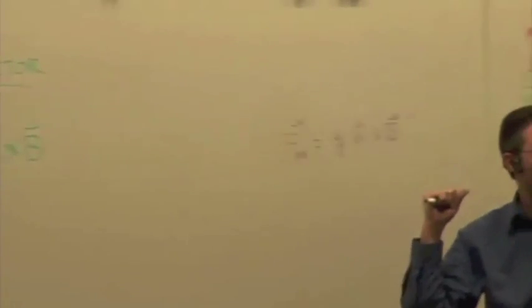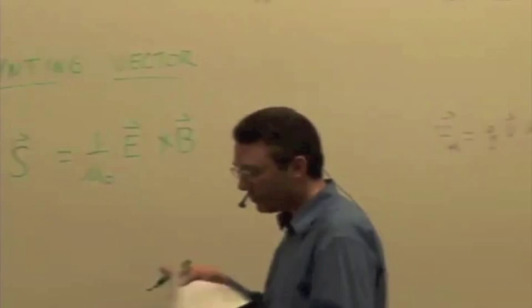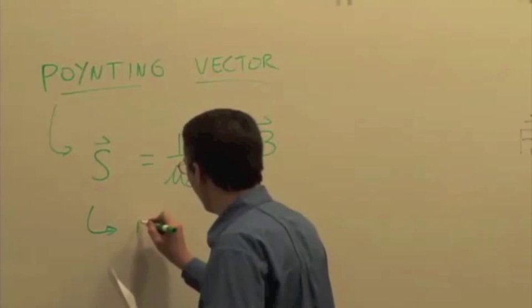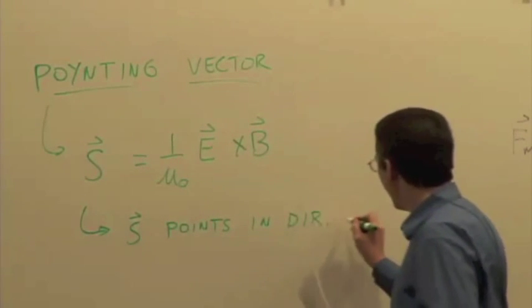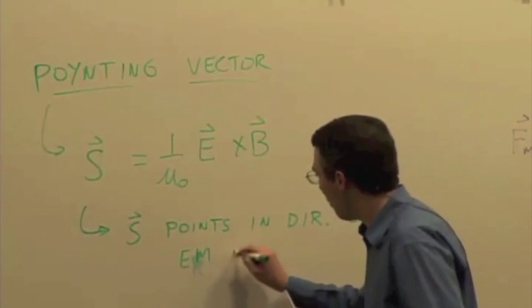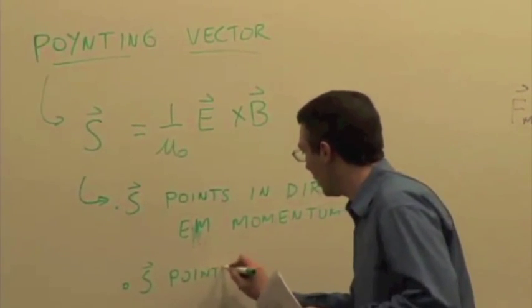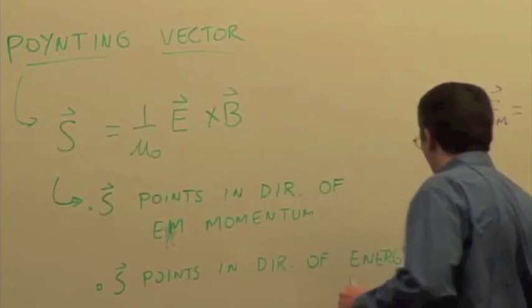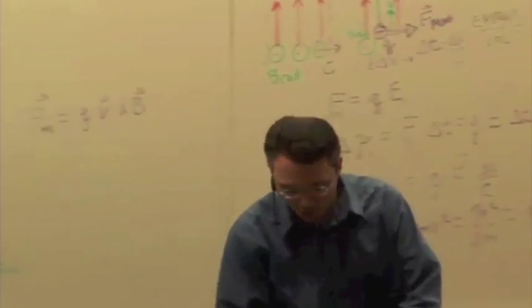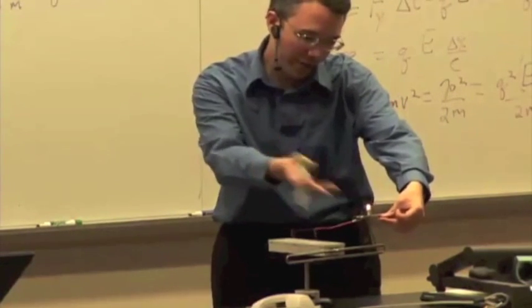So we already know that E cross B is going to give us the direction of propagation. So this Poynting vector, at least for radiation, points in the direction of propagation. And in particular, it points in the direction of the electromagnetic momentum. So the direction of the momentum is given by E cross B. It also points in the direction of energy flow, which makes sense when you're thinking about radiation, because energy is flowing outward from some source. Energy is flowing outward from our antenna in the direction of propagation to deliver energy to this receiver.